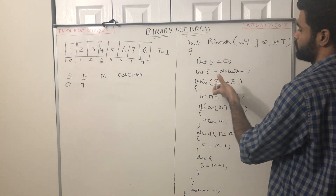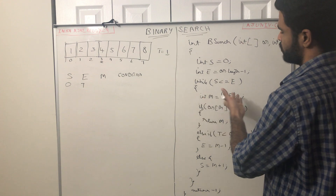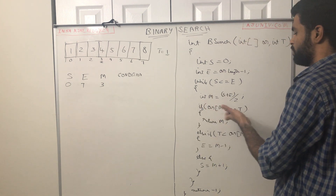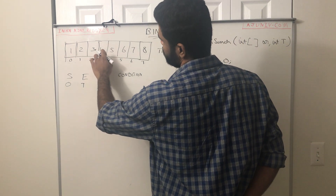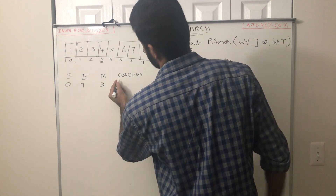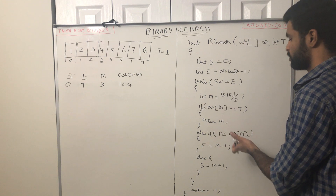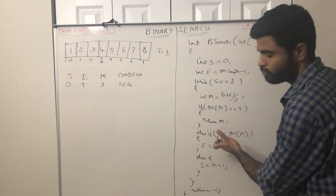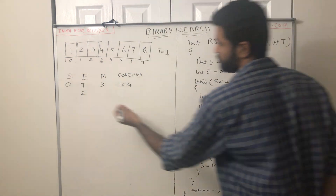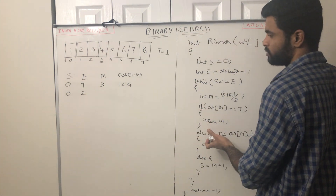We enter the while loop since 0 is less than or equal to 7. We get the middle element: mid = (0 + 7) / 2 = 3. We check whether the element at index 3 equals the target. The element at index 3 is 4, so we check whether 4 equals 1. It's not equal; the target 1 is less than 4. So it goes to the else block, and we change the end index to mid minus 1, which is 3 minus 1 = 2. The start index stays at 0.